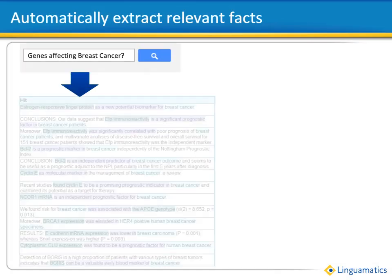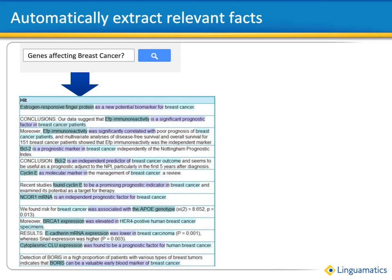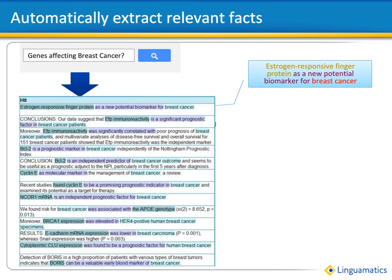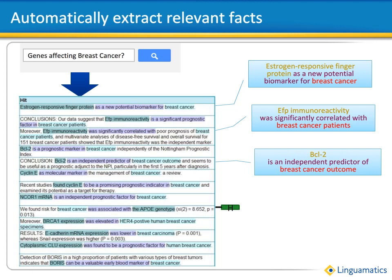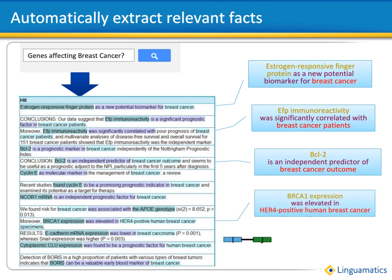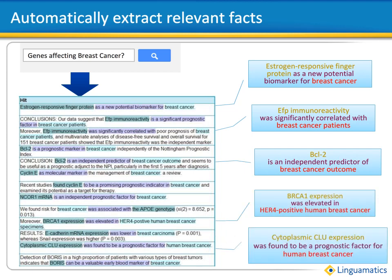By applying the technique just described, text mining systems like I2E can automatically identify and extract concepts, the relationships between them or the actions performed on them, and then present them as facts or assertions. So the user is presented with a set of facts or relationships to analyse instead of a set of documents.